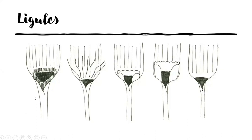Ligules can be found in that juncture in the collar region between the blade and the sheath. Ligules come in many different shapes and forms. You can have a hairy ligule like in these two diagrams here, or you can have a membranous ligule that looks kind of like a piece of dead skin, like these two diagrams here. Not all grasses have ligules — in that space where the blade forms the sheath, there may not be a structure there, and that's something to pay attention to.